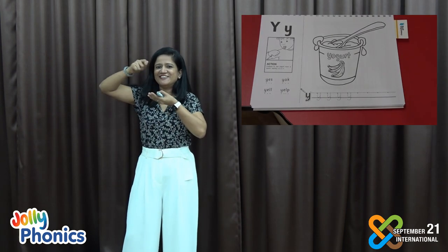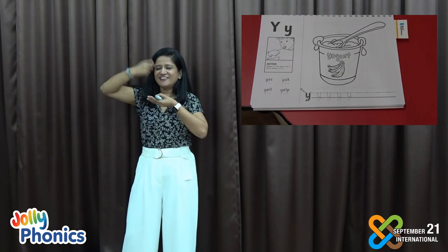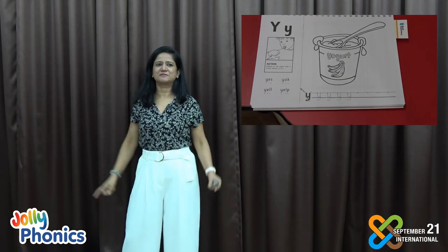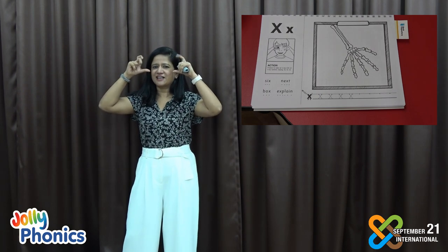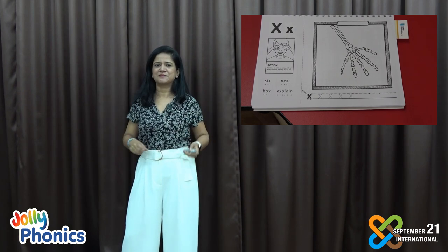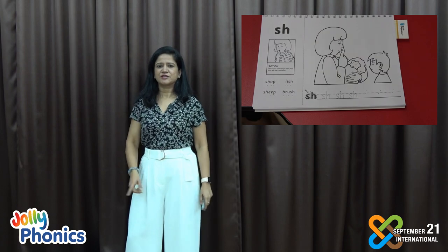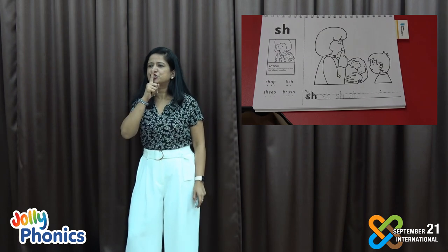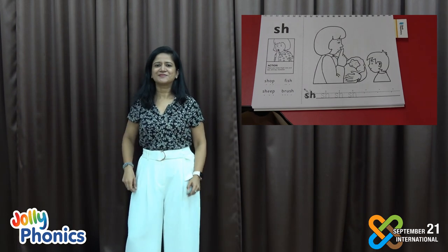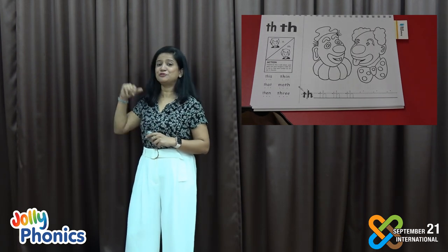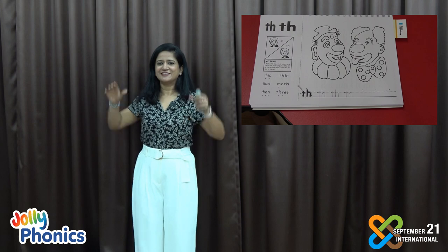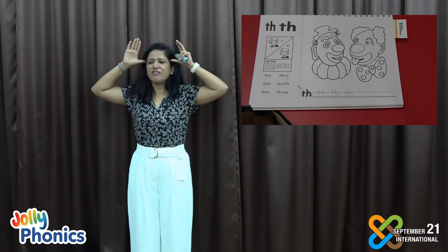Now we'll move to group number six. This is Y, Y, Y. Then X, X, X, X. Ch, Ch, Ch. Sh. Now again there are two sounds and this is 'The'.